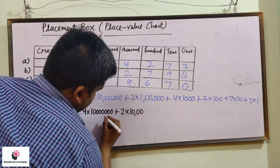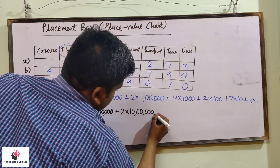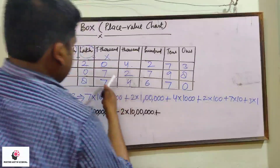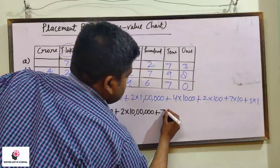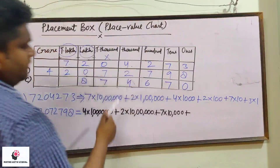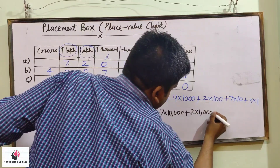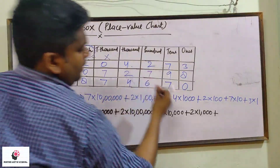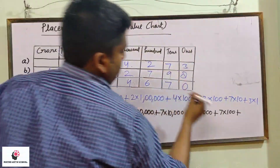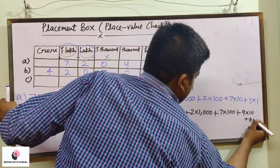Here we did not put the comma so let us mark ten lakh. Plus zero — we shall not consider the zeros. Next is seven into ten thousand, plus two into one thousand, plus nine into ten, and then eight into one.